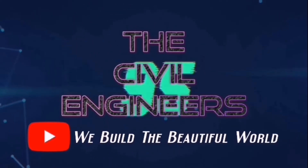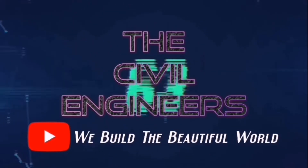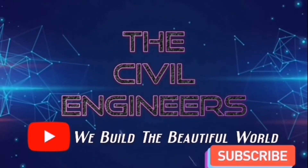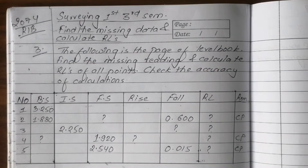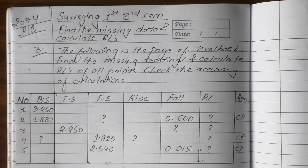Subscribe Prashant YT and press the bell icon and never miss our latest update. Namaskar sabae janalai. Today I am covering a Diploma in Civil Engineering topic on surveying: Auto level types. Type 1 is the rise and fall method, Type 2 is the H.I. method, and Type 3 is missing data numerics.